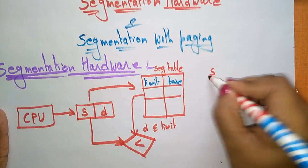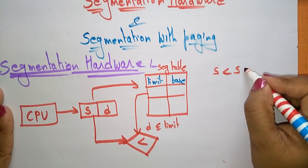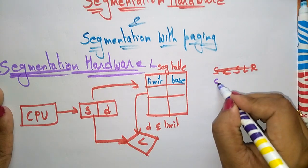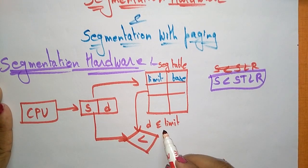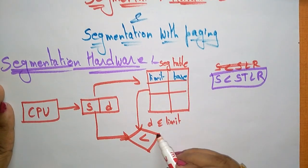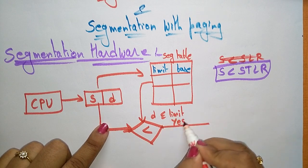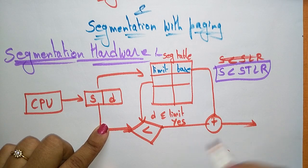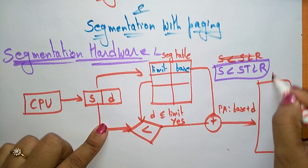Each segment S should be less than the segment table length register (STLR). So the segment offset must be less than or equal to the limit. If the condition is satisfied — if S is less than the STLR — then with the help of the base address, the physical address is computed as base plus offset D, and that result is stored in physical memory.